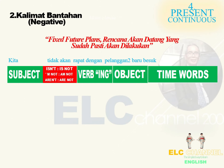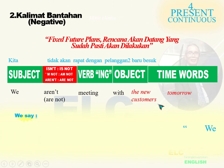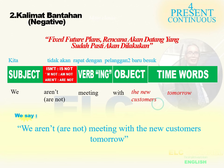Bantahan berikutnya: Kita tidak akan rapat dengan pelanggan-pelanggan baru besok. We (to be-nya are), ditambahkan not menjadi aren't atau are not, rapat = meeting, dengan = with, pelanggan-pelanggan baru = the new customers, besok = tomorrow. Bahasa Inggrisnya: We aren't or are not meeting with the new customers tomorrow.